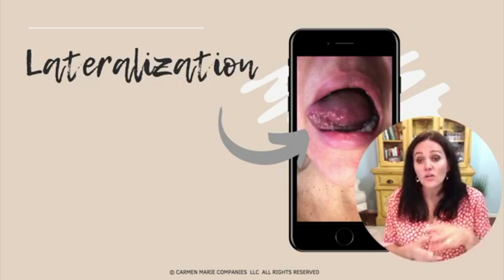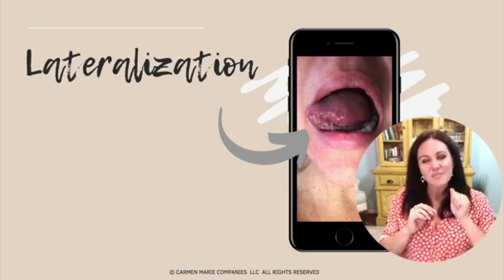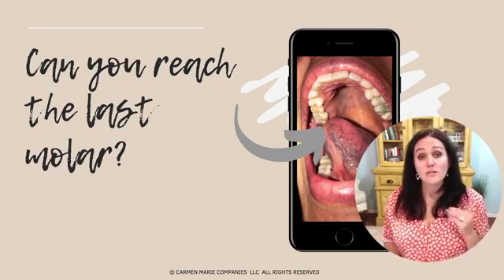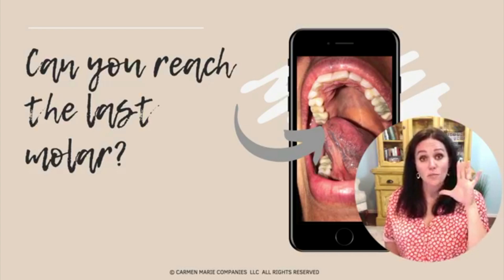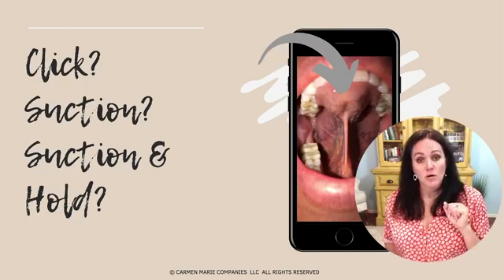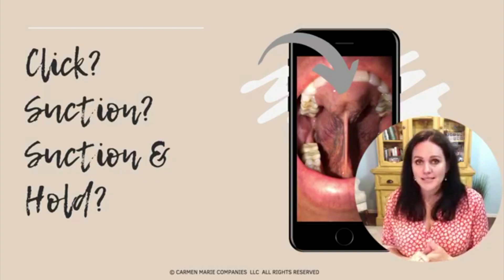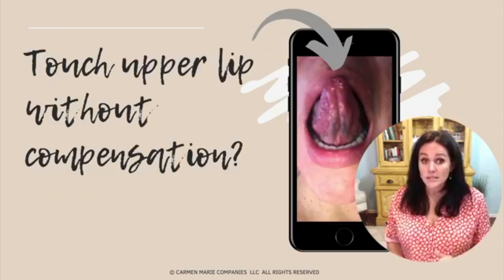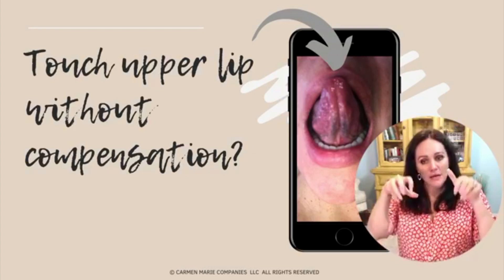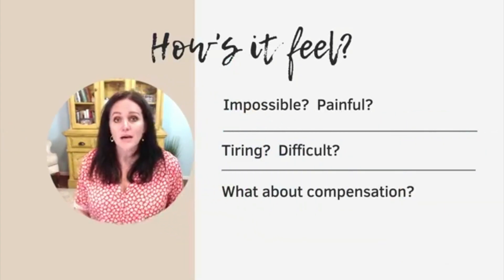I've had clients say it's worse on the left. They have a release done, tell the doctor where they feel the struggle, and I've had a client who went back for a second release because she could still feel something pulling — they found more fiber on the left. Trust your gut on what you feel. Can you reach the last molar? How far can you stay open? Is your chin following? Does it make sense that there's a struggle? The most important is click suction and suction-and-hold. When a client is ready for a frenectomy, they need to be able to do that.